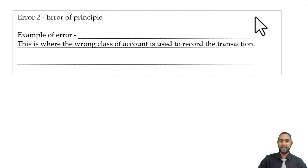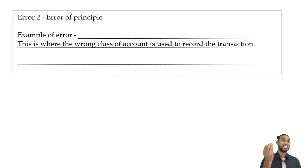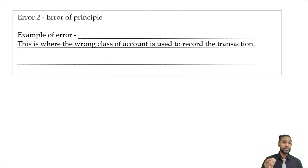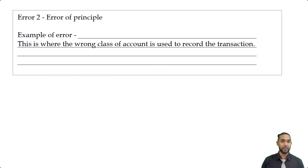Error of principle: this is where the wrong class of account is used to record the transaction. For example, motor vehicle is an asset and motor expenses is an expense account. If you paid for motor expenses but debited motor vehicle instead of motor expenses, that's an error of principle — the wrong class of account is used.